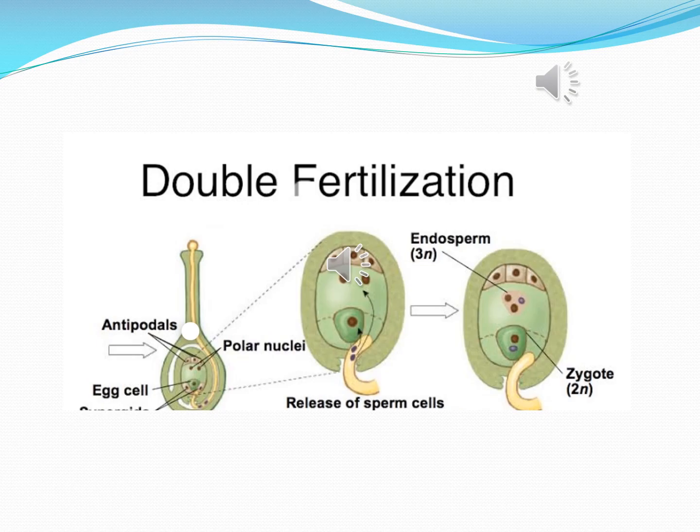In the second diagram, one male gamete fuses with the egg — forming the zygote — and that process is called syngamy. The other male gamete fuses with the endosperm nuclei, forming a triploid (3n) structure. The zygote is diploid (2n). This triploid nucleus is called the primary endosperm nucleus (PEN), which is also called endosperm. From these diagrams we can easily understand double fertilization and triple fusion.